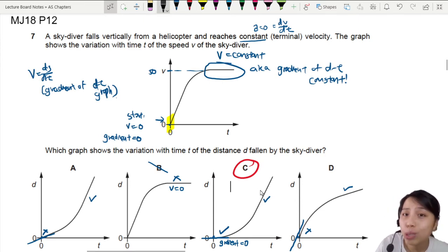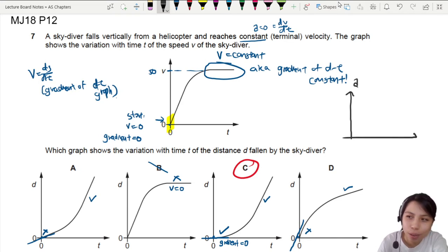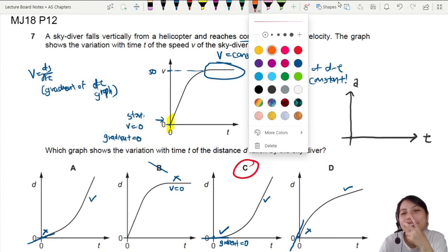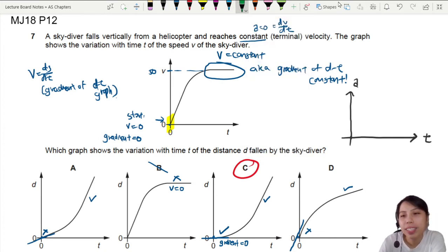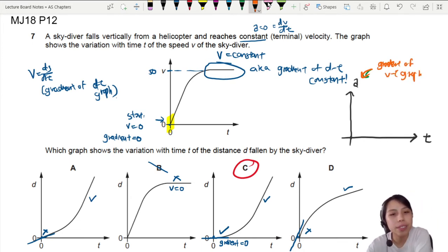So what if I were to ask you how the acceleration would look like? How would you look at the velocity and draw an acceleration? Acceleration will be our gradient of VT graph. So I'm going to draw a few gradients. I start off with a constant gradient, but then my gradient starts to decrease, decrease, and eventually no gradient. So acceleration, zero.